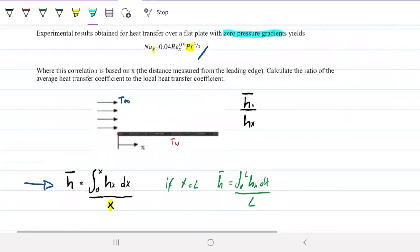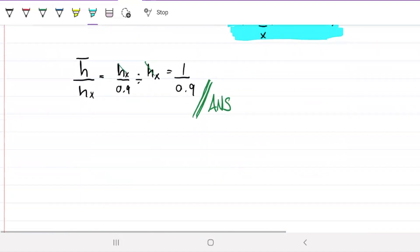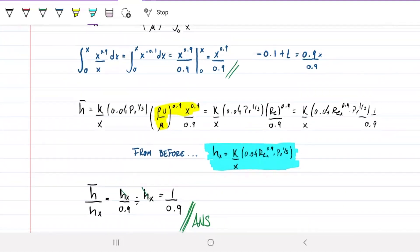Now, this is only valid for a flat plate with zero pressure gradients. If any other thing changes, if we don't have a flat plate anymore, if we have a pipe or something like that, if we don't have zero pressure gradients, then that relationship there is not valid anymore.